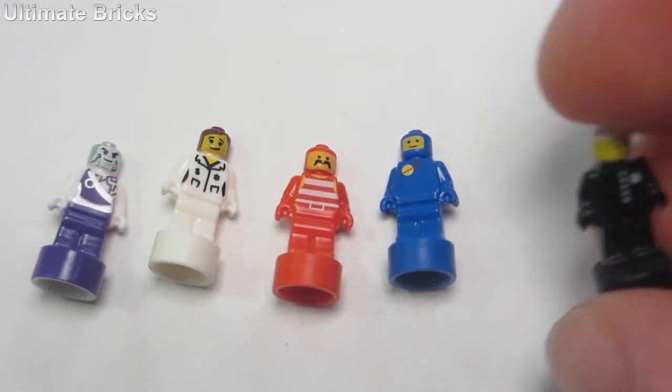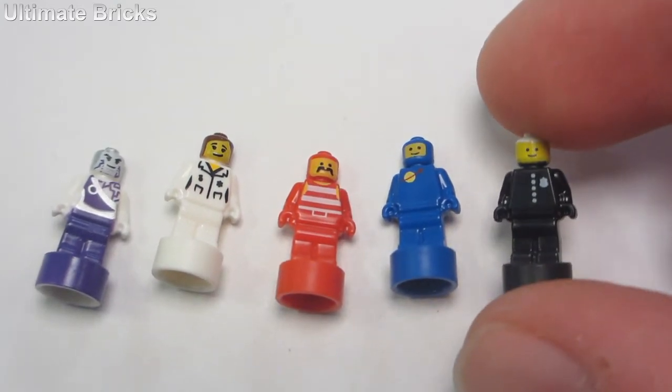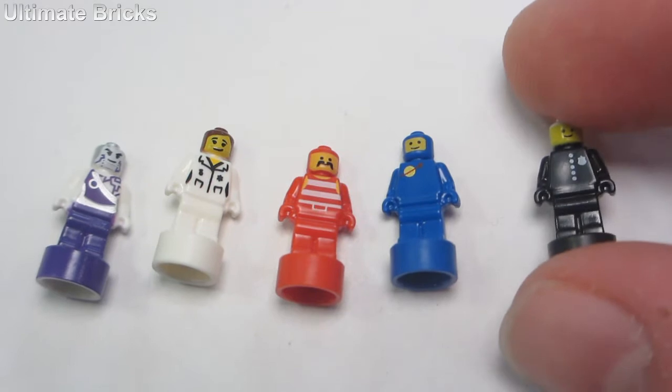They're so tiny, so hard to show them off. You can see the policeman, he has a hat as well as torso print.